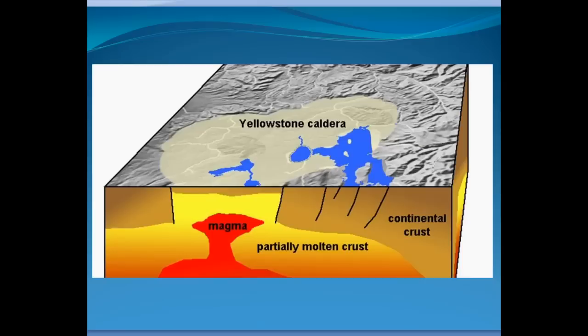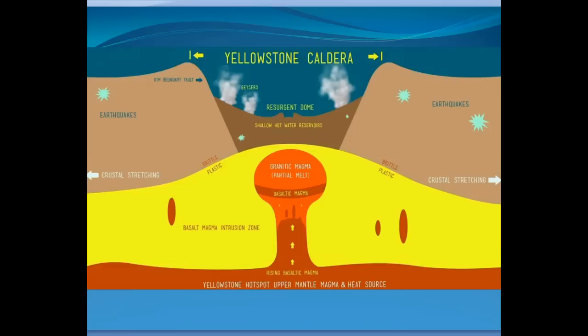In Yellowstone, volcanic magma came up close to the surface and caused a gigantic explosion that covered an area for many, many miles. Within this area where the volcano exploded — what geologists call a caldera — there is still magma close to the surface. There have been a series of explosions underneath Yellowstone over the last couple million years, and some geologists think it might happen again.